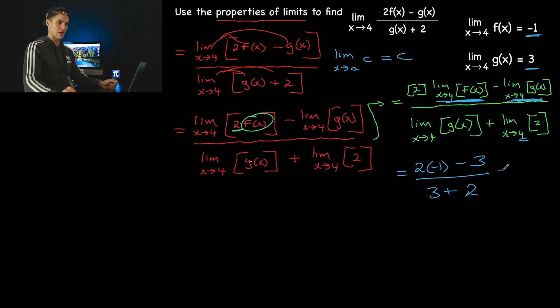So what would we have? Negative 5 over positive 5. Final answer is negative 1. So that is a question applying the different properties.